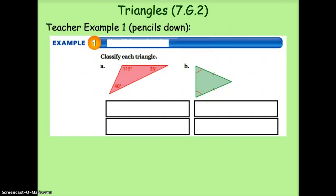Let's take a look at teacher example one, which means your pencils should be down. Teacher example one asks us to classify each triangle. So the only information we're given is the measure of each angle, and we notice that each angle has a different measure.